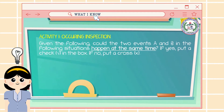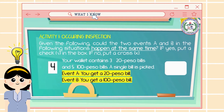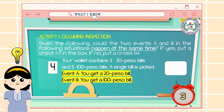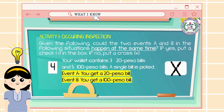Number 4: Your wallet contains three 20-peso bills and five 100-peso bills. A single bill is picked. Event A: you get a 20-peso bill. Event B: you get a 100-peso bill. The answer is X, because it was instructed that you will only get a single bill, and you cannot have a 20 and 100-peso bill at the same time.